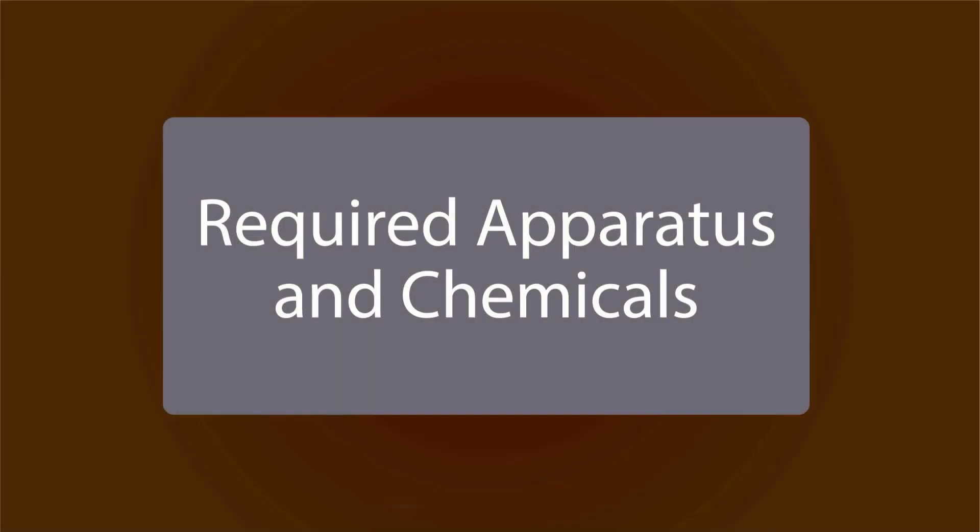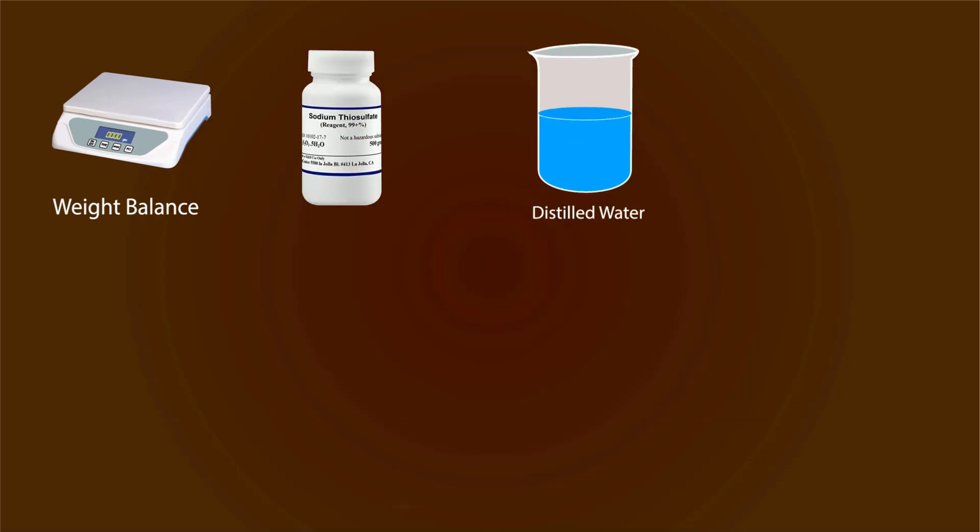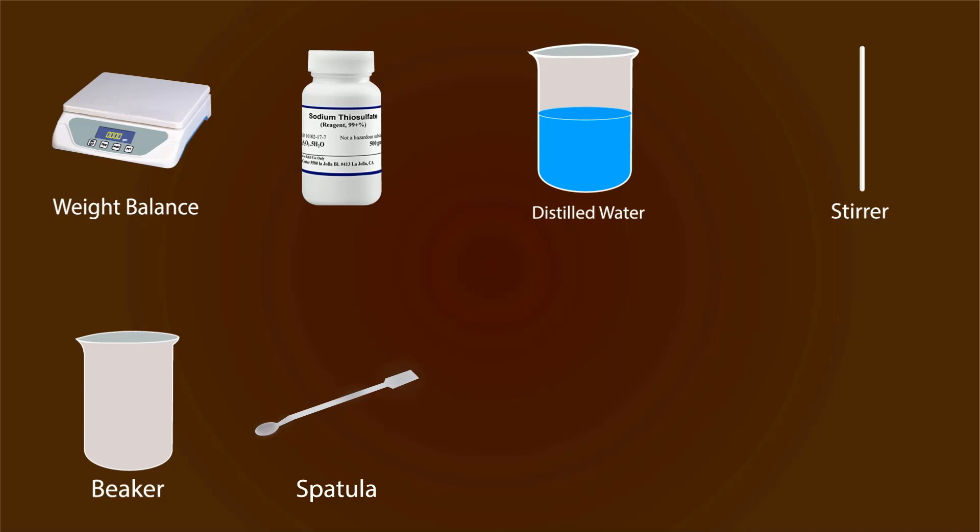Required apparatus and chemicals include a weight balance, sodium thiosulfate in a bottle, distilled water in a beaker, a stirrer, an empty beaker, a spatula, a funnel, and a volumetric flask of 1000 milliliters.